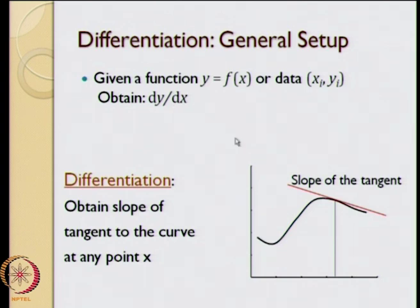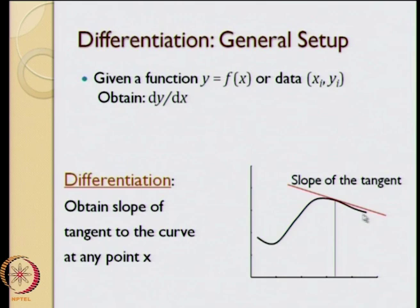What it means geometrically is that differentiation is nothing but obtaining the slope of the tangent to the curve at the desired point. This is the curve f of x and the slope of the tangent at f of x is just the numerical derivative.